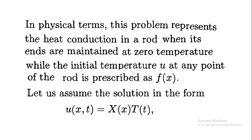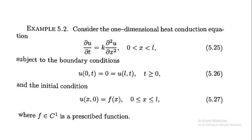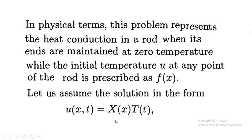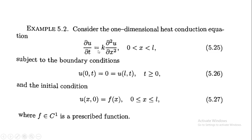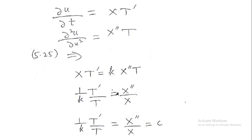Let us assume the solution in the form u(x,t) = X(x)·T(t), since we have two independent variables x and t. Then ∂u/∂t = X·T′ and ∂²u/∂x² = X″·T. Substituting these into equation 5.25 gives X·T′ = k·X″·T. Dividing both sides appropriately yields (1/k)·(T′/T) = X″/X.